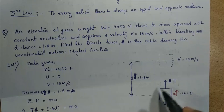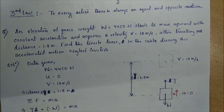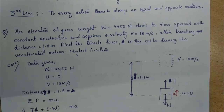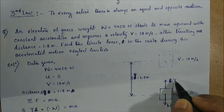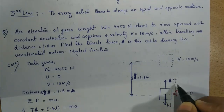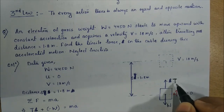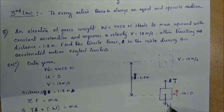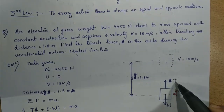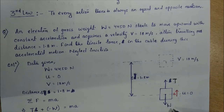Drawing the free body diagram of the elevator: weight acts vertically downward, and the elevator is connected by a cable in which a tensile force T acts upward. So we have two forces — tensile force T and weight W of the elevator.